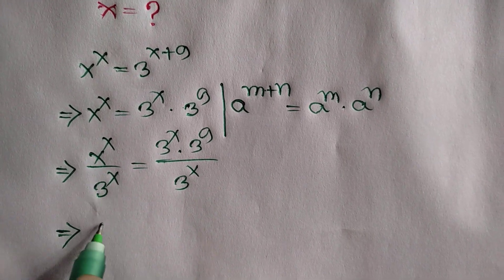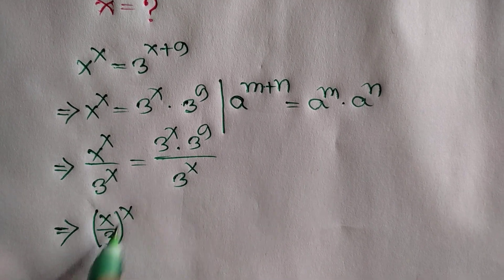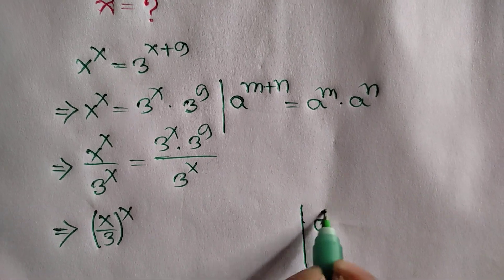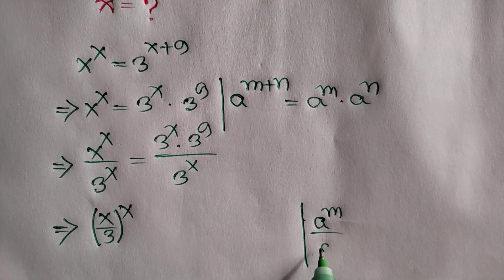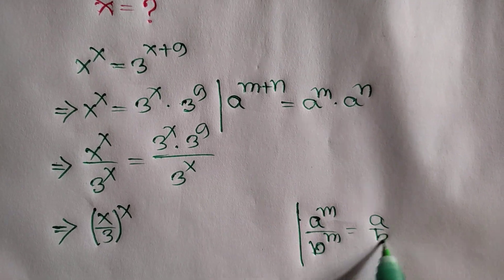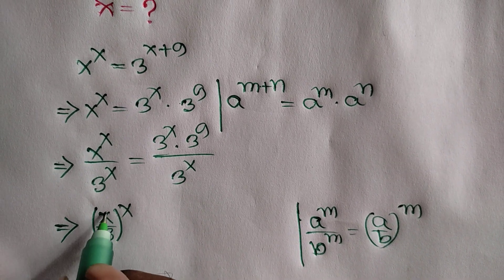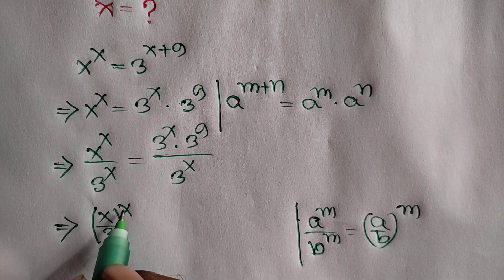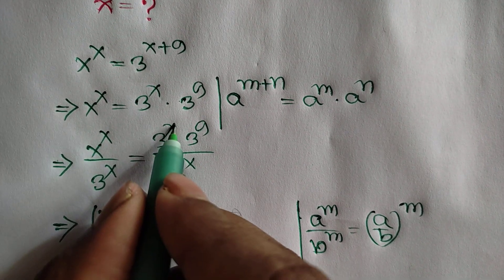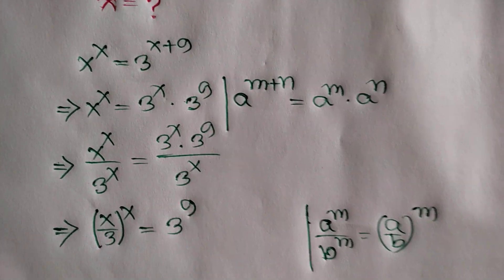Here we can write x over 3, whole to the power x, applying the formula: a to the power m over b to the power m is equal to a over b whole to the power m. So x over 3, whole to the power x, is equal to 3 to the power x canceling out 3 to the power x, leaving 3 to the power 9.